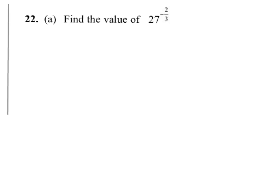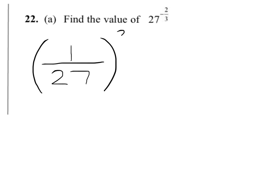We're going to find the value of 27 raised to the power of minus 2 thirds. To do this, we need to know the rule that tells us that if we reciprocate 27 — write it upside down — then we can get rid of the negative sign. So 27 to the minus 2 thirds is equal to 1 over 27 to the power of 2 thirds.